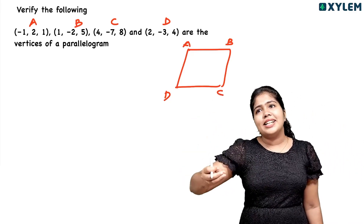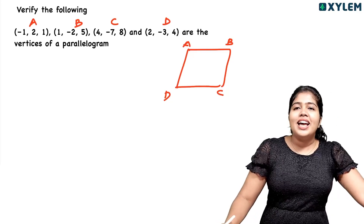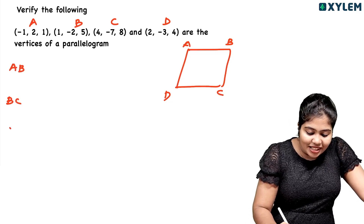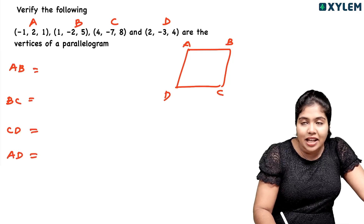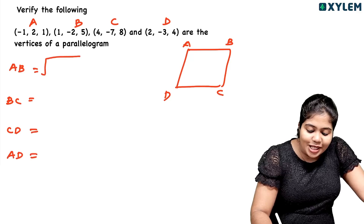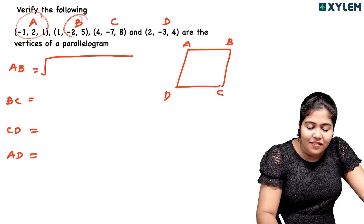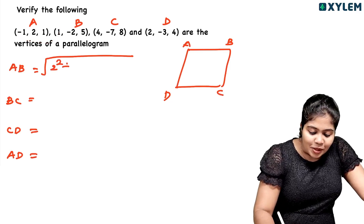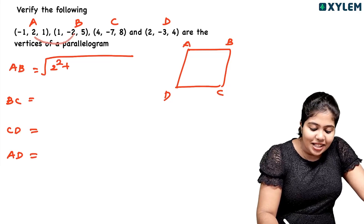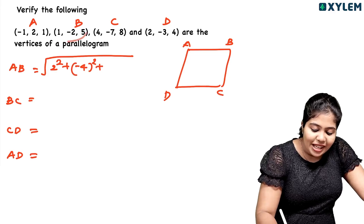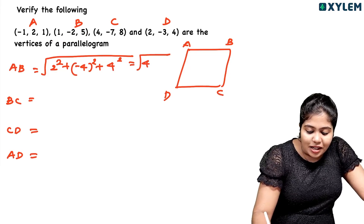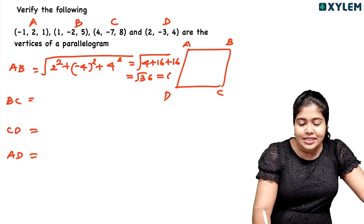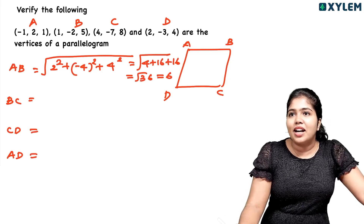The important property of a parallelogram is that opposite sides are equal. So I need to find the distance AB. AB = root of (1−(−1))² + ... = root of (1+1)² giving 2², then (−4)² = 16, and (5−1)² = 4². Working through: root of 16 + 16 + 4 = root of 36 = 6. So AB = 6.